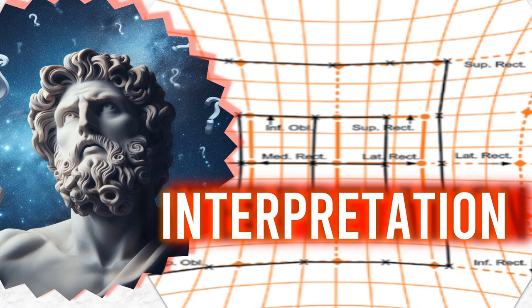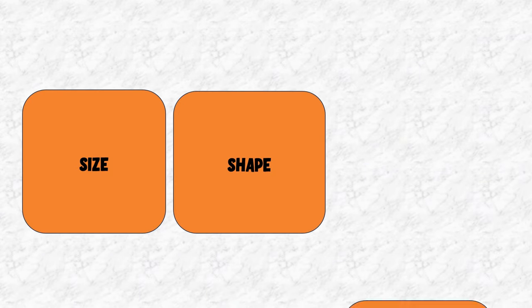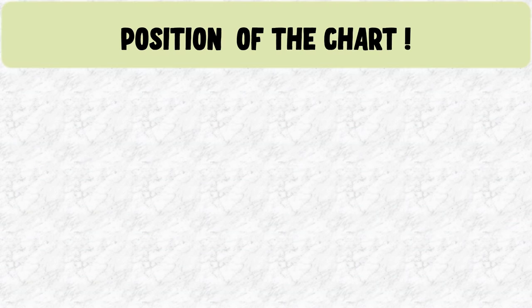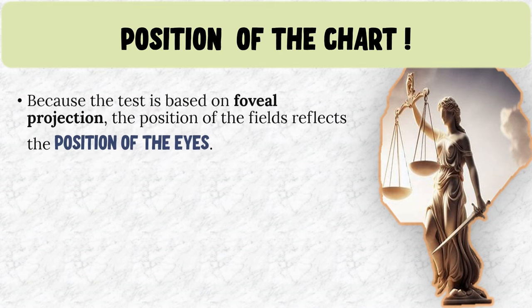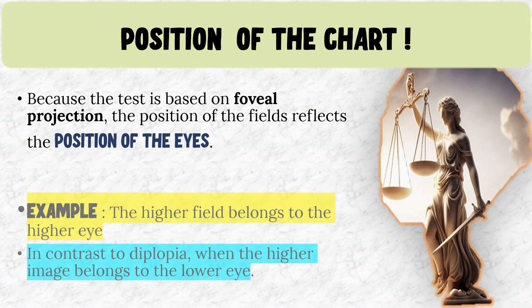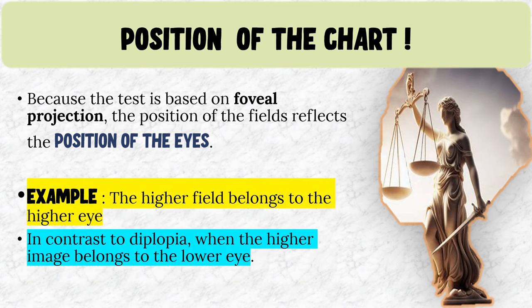Let's deep dive into the interpretation of Hess charting. When interpreting the Hess chart, the size, shape and position of the various points present in the chart is very important. Specifically, the Hess chart is based on the principle of coeval projection and the position of the fields will reflect the position of the eyes. The higher field usually belongs to the higher eye, which is in contrast to diplopia where the higher image belongs to the lower eye.